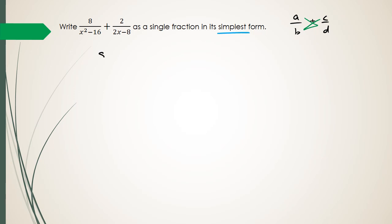So the way you go about it is, I first write down my equation: x squared minus 16 plus 2 over 2x minus 8. And what I do is, particularly the denominator, because it looks like that, I'm actually going to factorize the denominators.